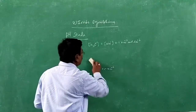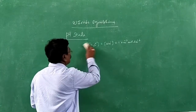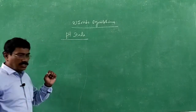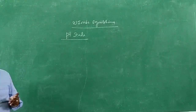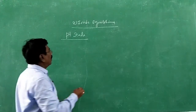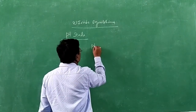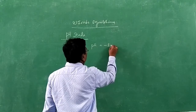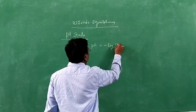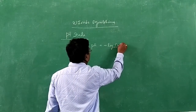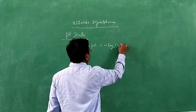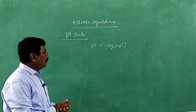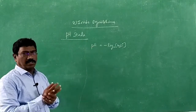The pH scale was introduced by Sorenson. According to him, pH is nothing but the negative logarithm to the base 10 of hydrogen ion concentration, or hydronium ion concentration. We write it as small 'p' and capital 'H'.